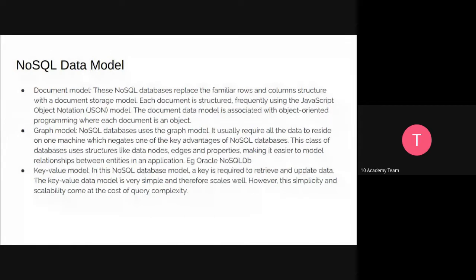One example of a graph model database is Oracle NoSQL Database. The third NoSQL data model is the key-value model. A key is required to retrieve and update the data — when we want to retrieve data, we use the key-value pair. The key-value data model is very simple and can be scaled easily, but it might be a bit costly. This is the data model of NoSQL databases.